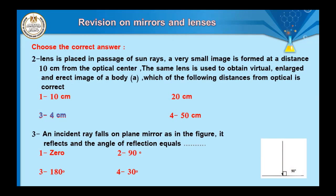Question number three: an incident ray falls on a plane mirror perpendicular to its surface. It reflects back on itself. The angle of reflection equals zero, because the angle of incidence equals the angle of reflection equals zero.